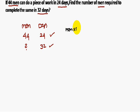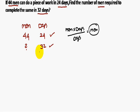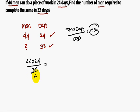Here is a shortcut formula: men × days ÷ days gives you men. So for the first statement, multiply men and days: 44 × 24, divided by the second statement's days, which is 32. Simplifying gives us 33. So 33 men are required to complete the work in 32 days.